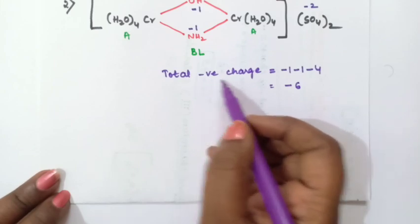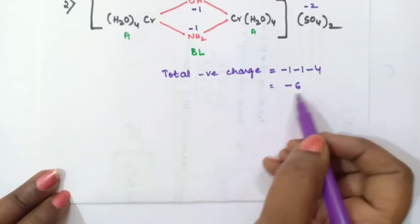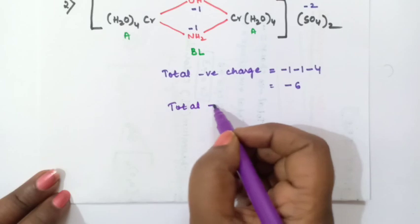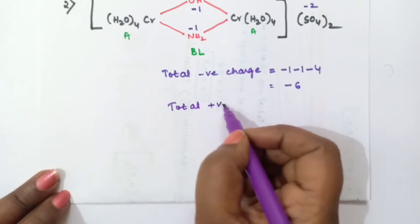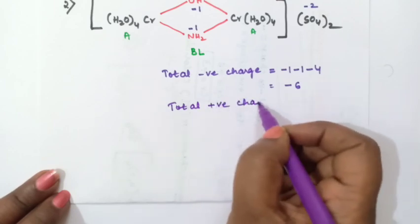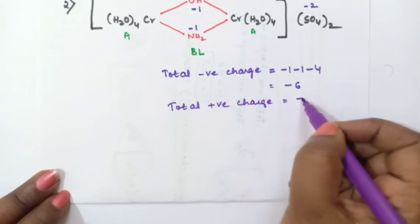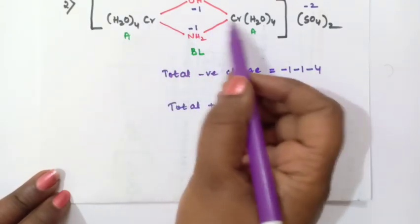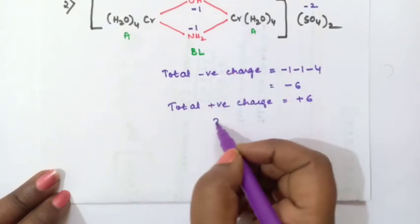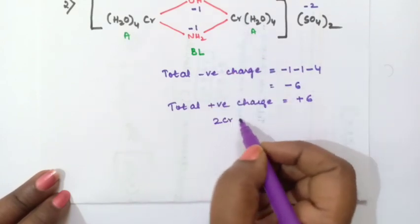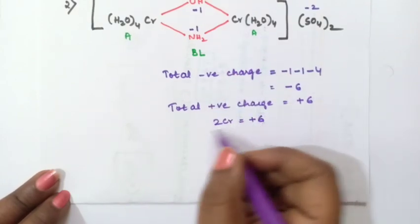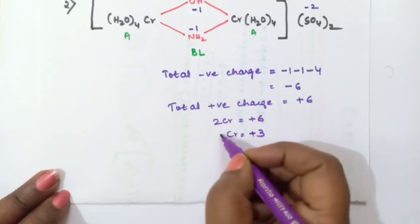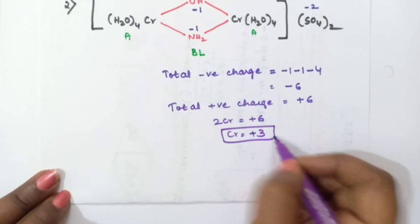If the total negative charge is −6, then the total positive charge is also +6. There are 2 chromium atoms, so 2 Cr = +6, therefore 1 chromium has oxidation state +3.